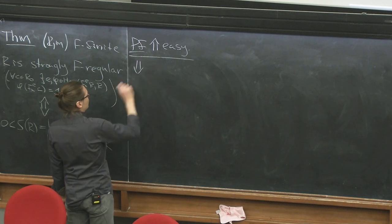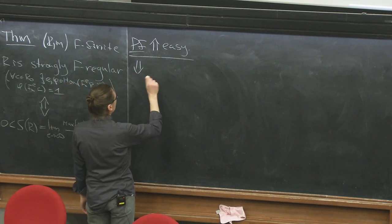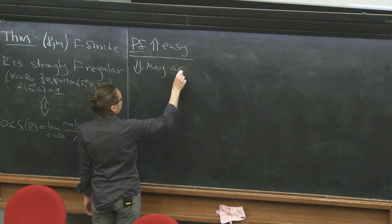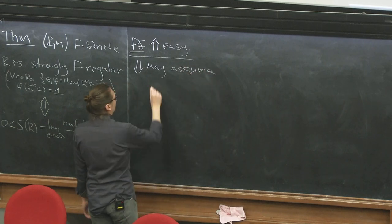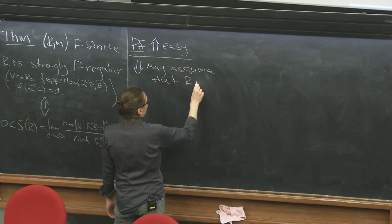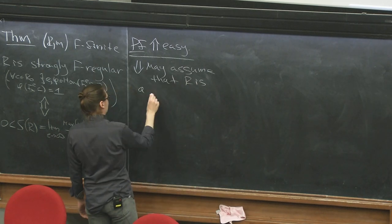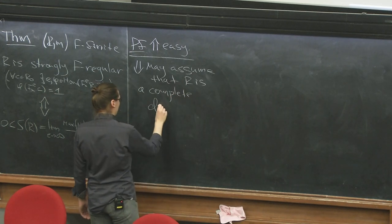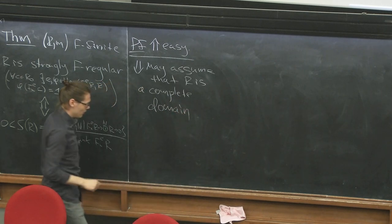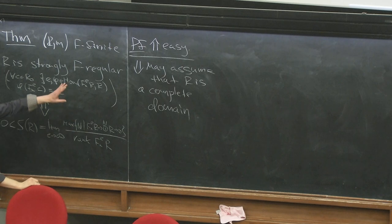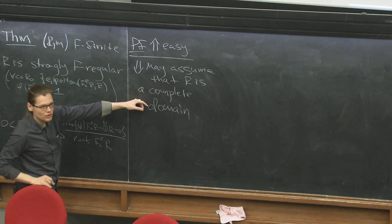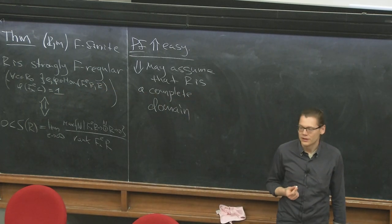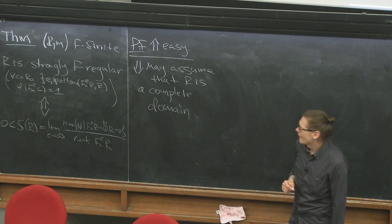Let's start working on this. The first thing to note is that we may assume R is a complete domain. With some work, for which we don't have time, you can show that strong F-regularity passes to completion. And we showed yesterday that anything strongly F-regular and local has to be a domain. So this is how we get here.